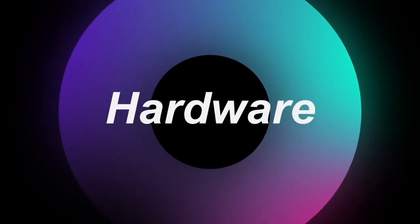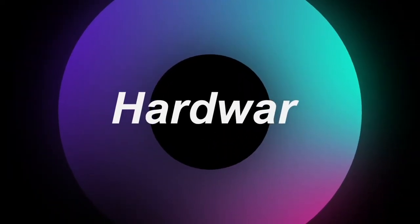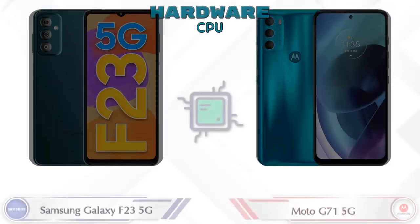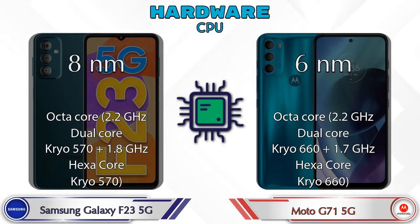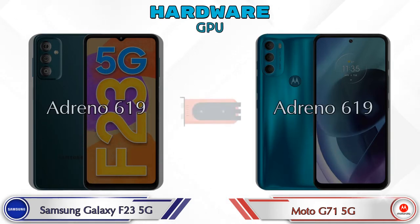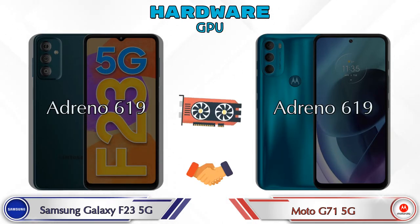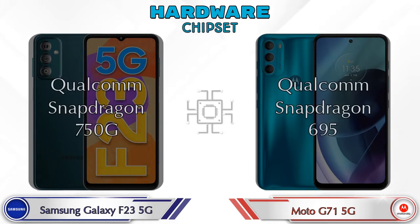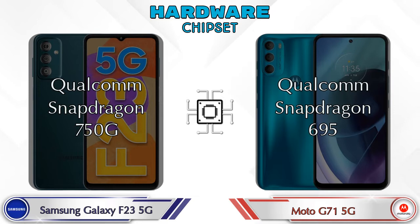First we talk about the most important part of the phone: hardware. Looking at the CPU details, both phones have the same GPU which is Adreno 619. Talking about chipset, Qualcomm Snapdragon 750G is available in the Galaxy F23 5G and Qualcomm Snapdragon 695 is available in the G71 5G.